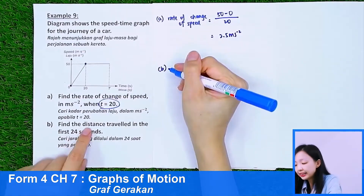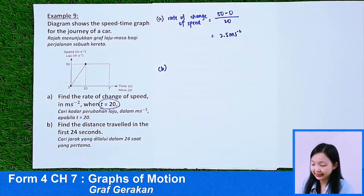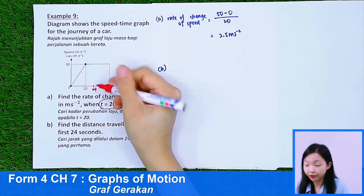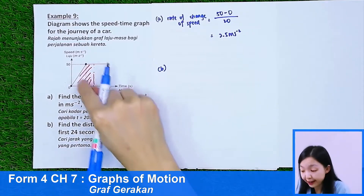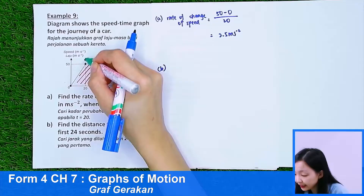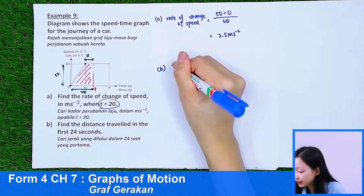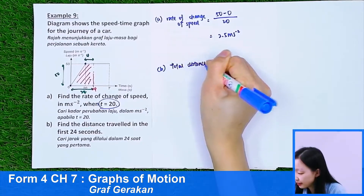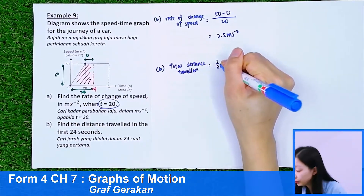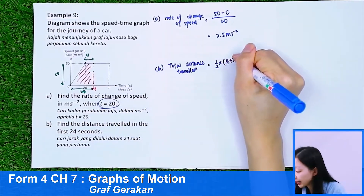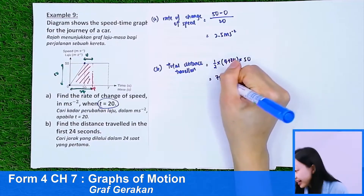Part B: Find the distance traveled in the first 24 seconds. I estimate that the uniform speed ends at t equals 24. I find the area of the trapezium with parallel lengths 4 and 24 and height 50. Distance equals 1/2 times (4 plus 24) times 50, giving a final answer of 700 meters.